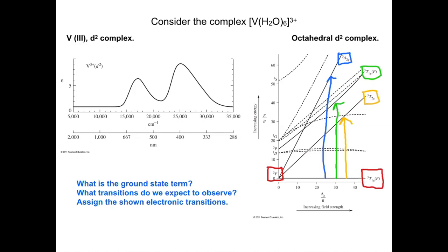We only see two peaks. In this case, it turns out that this last transition that goes to the triplet A2g is too high in energy. It's located somewhere over here, and we're not seeing it in the UV-Vis spectrum.